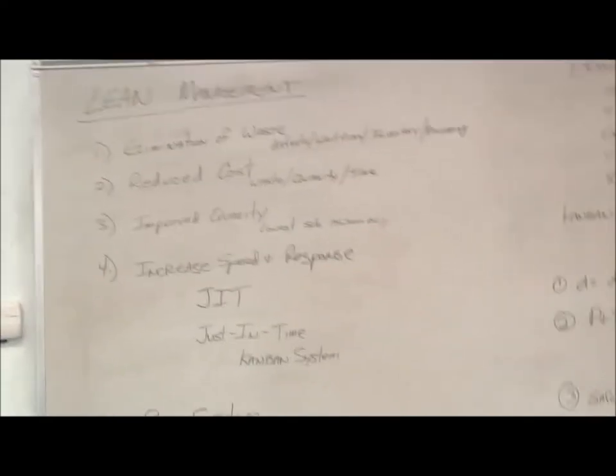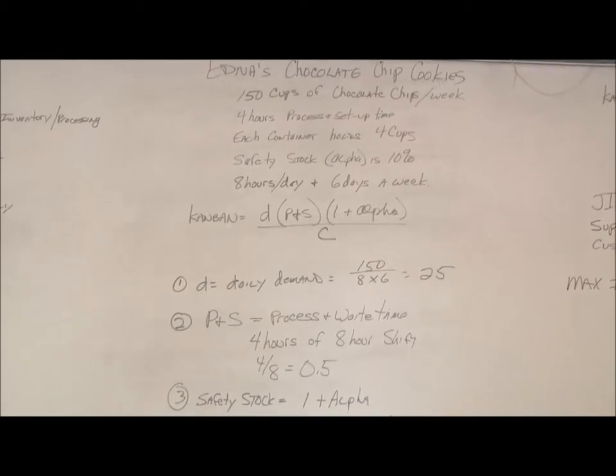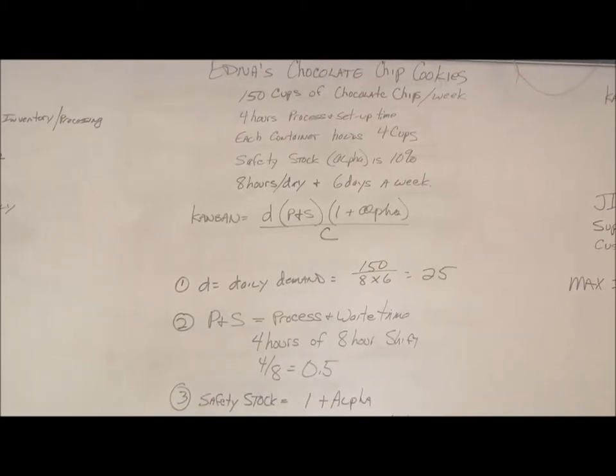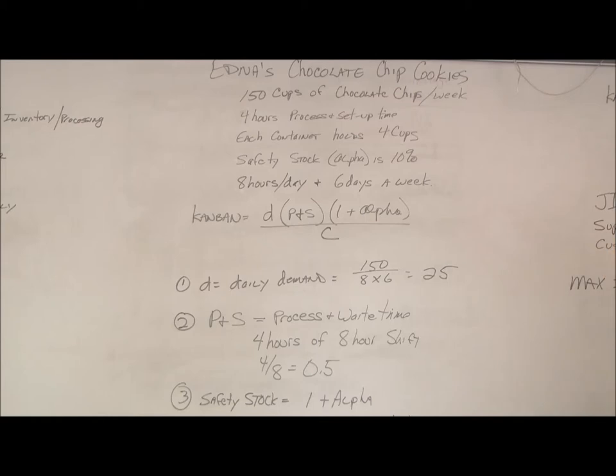All right, so let's set it up here. With this example, we're going to look at Edna's cookies. I used to know a woman, Edna, who baked cookies - oh man, they were delicious. So Edna's chocolate chip cookies - she uses 150 cups of chocolate chips per week. She wants to reduce that number because they can melt in the hot kitchen, they can attract rodents. Can you believe people eat the chocolate chips as they go by? So having less around would improve the quality.